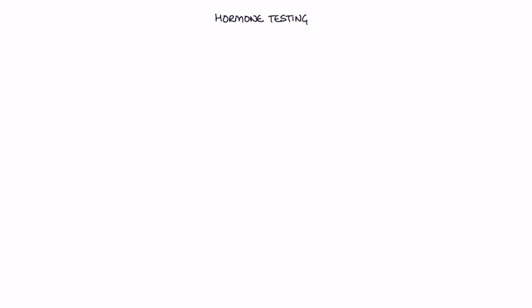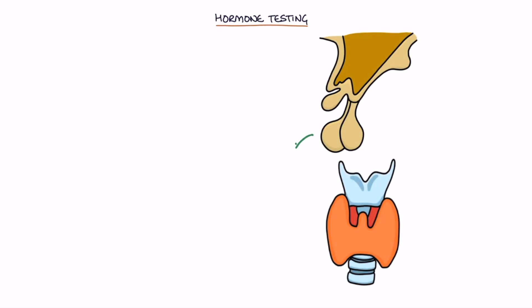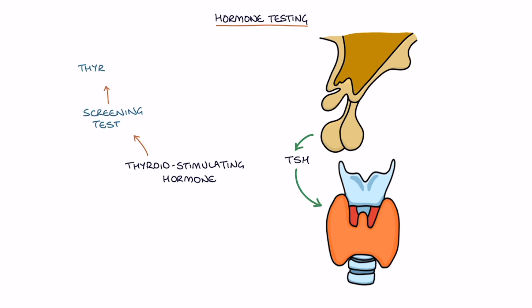Next let's talk about hormone testing. Thyroid stimulating hormone, or TSH, is used as a screening test for thyroid disease. When TSH is abnormal, T3 and T4 can be measured to gain more information.